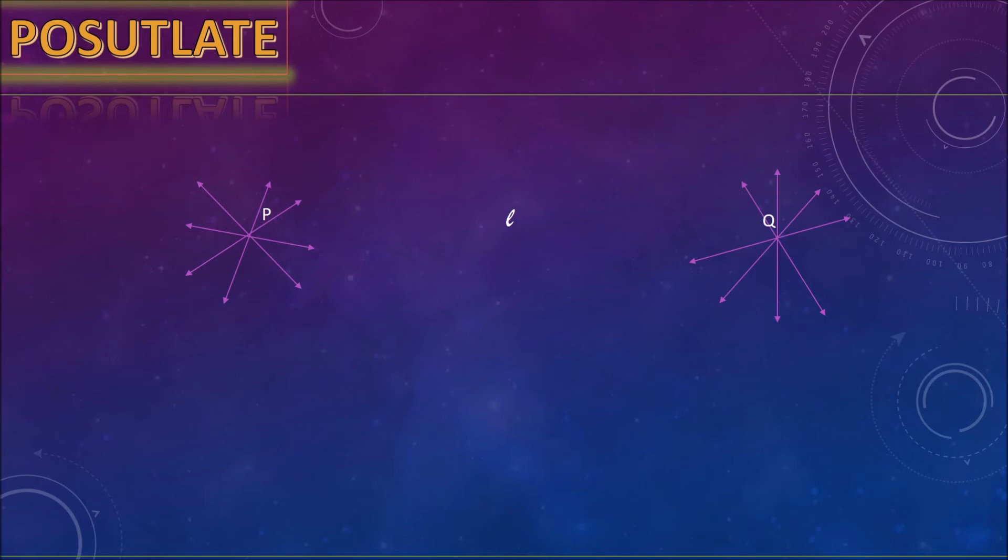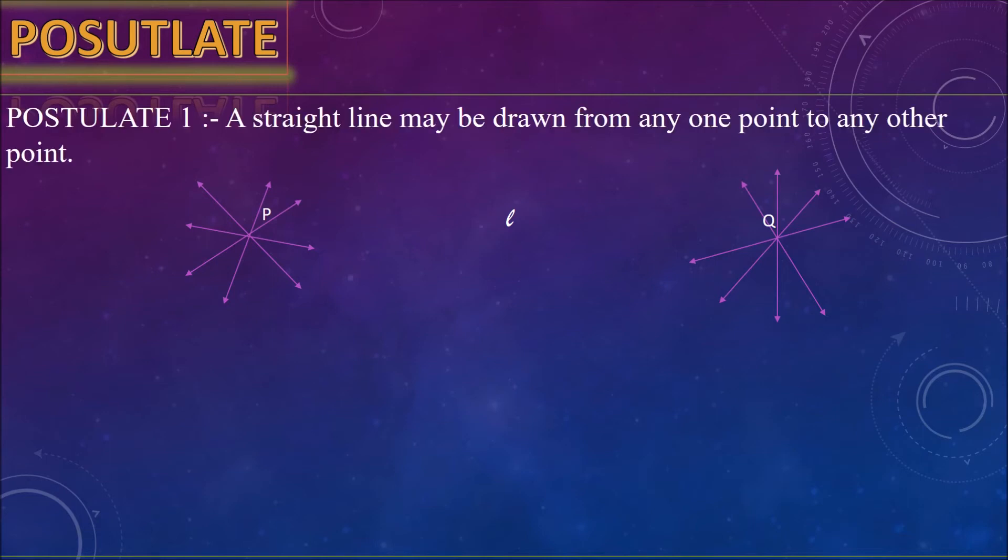Now let us study postulates. A postulate is a statement whose validity is accepted without proof. Euclid gave five postulates. The first postulate is: a straight line may be drawn from any one point to any other point. This postulate tells us that at least one straight line passes through two distinct points.